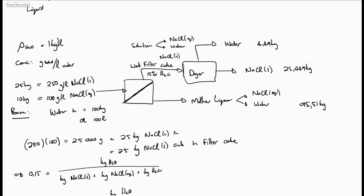We can now calculate the amount of sodium chloride that came in. We know that 25 kilograms leaving the wet filter cake as solid sodium chloride came in, and by using the concentrations in and 100 liters of water in, we can calculate the amount of sodium chloride as solids and in aqueous form entering the system. Using this, we can calculate our final value, which is the amount of sodium chloride leaving with the mother liquor as aqueous sodium chloride. And the mass balance is solved.